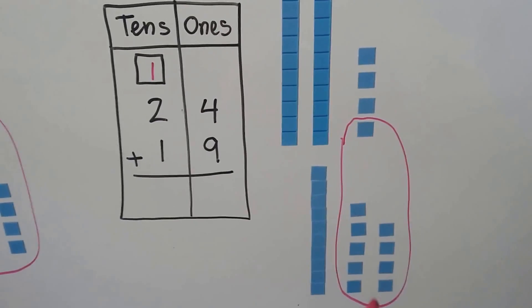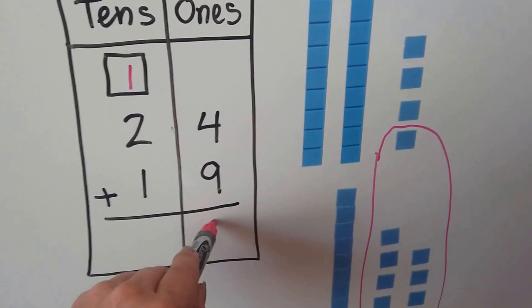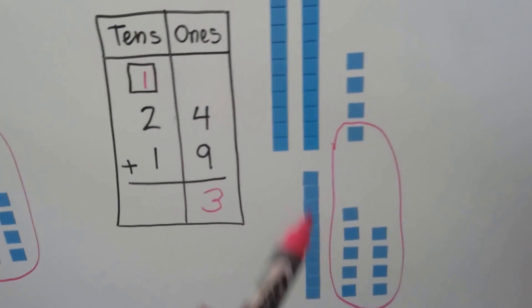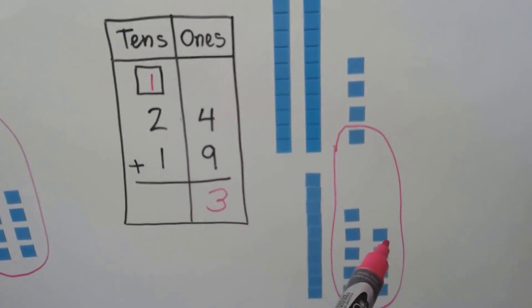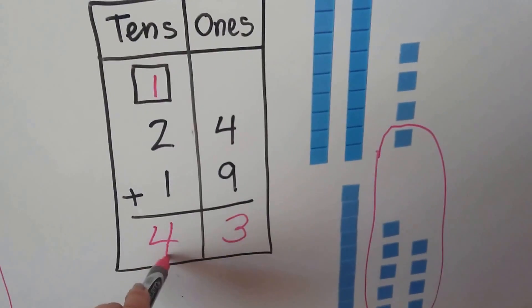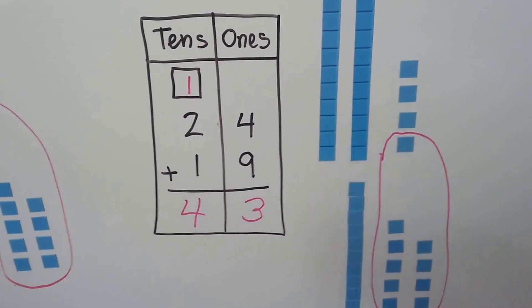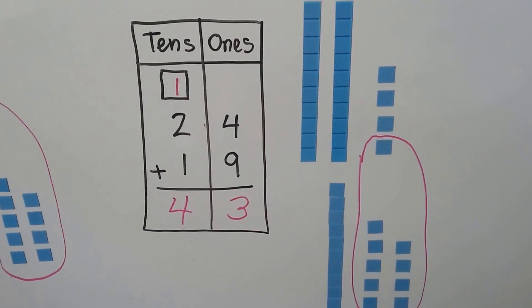That made a 10. Now that we made a new 10, we can add it to the tens place. How many ones are left over? 1, 2, 3. How many tens do we have? 1, 2, 3, 4. 1 plus 2 is 3 plus 1 more is 4. We have 43.